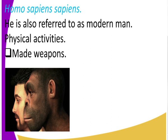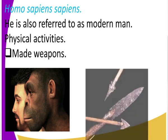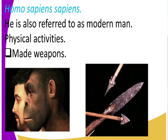Homo Sapiens Sapiens made tools. Look at the kind of tools made — I can see a spear there, I can see an arrowhead. So modern man, the Homo Sapiens Sapiens, had the ability to make weapons. These weapons were used in hunting, in making shelters, and in protection.